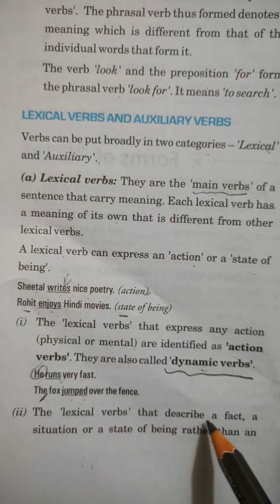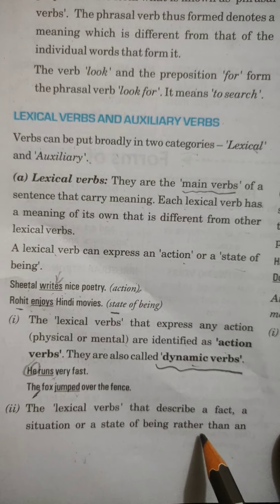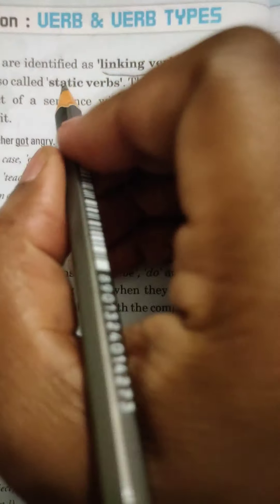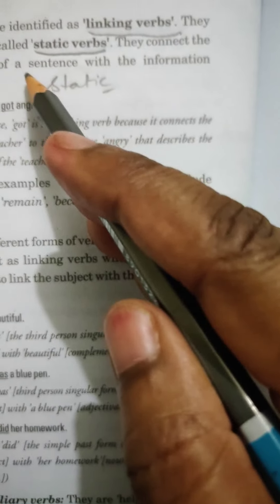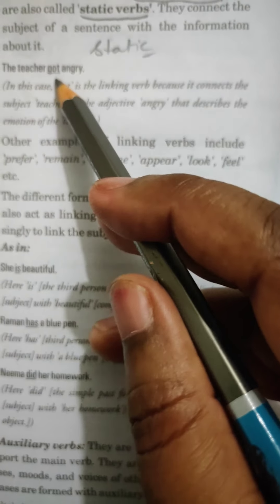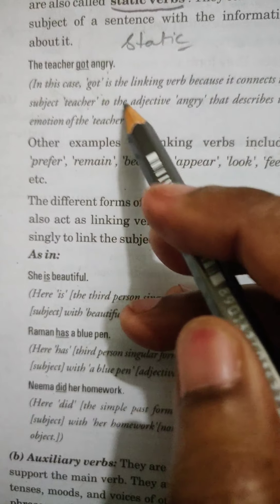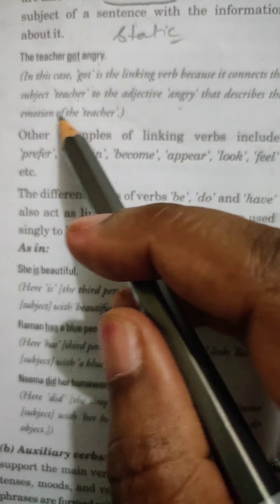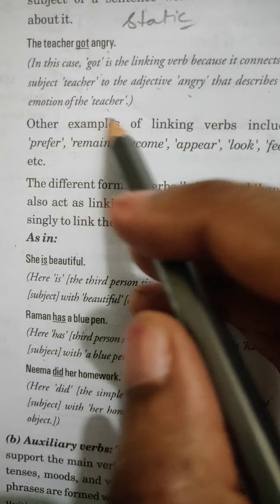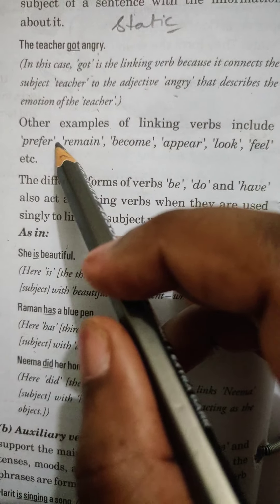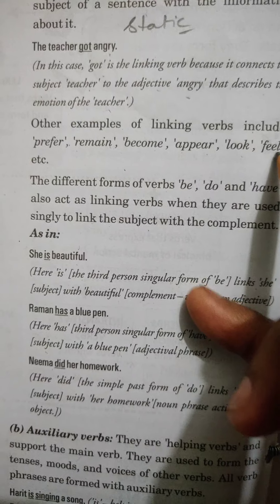Next, the lexical verbs that describe a fact, a situation or state of being rather than an action are identified as linking verbs. They are also known as static verbs. Static verbs. They connect the subject of a sentence with the information. For example, the teacher got angry. In this case, got is a linking verb because it connects the subject teacher to the adjective angry that describes the emotion of the teacher.